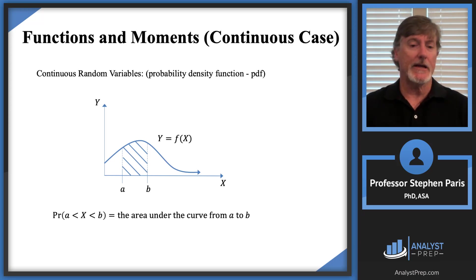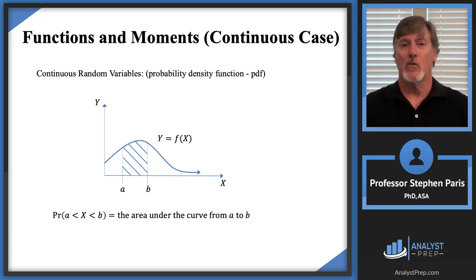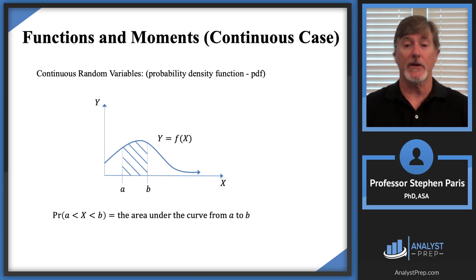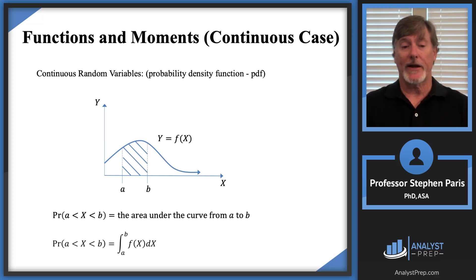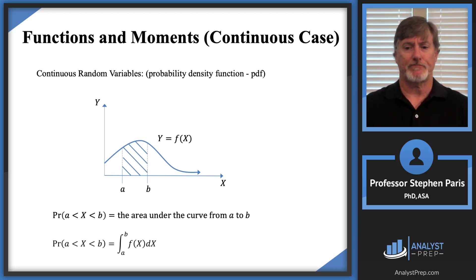The area under the curve over the entire support of the random variable is one, so the area under the curve from A to B will be some number less than one. The density function is defined in such a way that that area under the curve from A to B is exactly the probability that the random variable will be between A and B. And of course, from calculus, when we're talking about areas under the curve, we're talking about integration — we calculate that value by integrating over the interval from A to B of the density function.